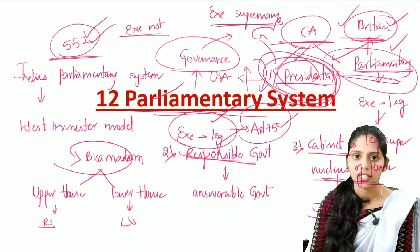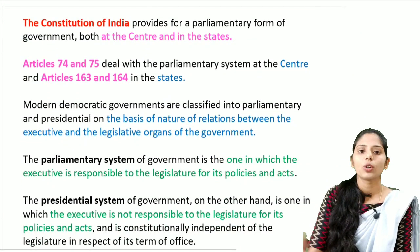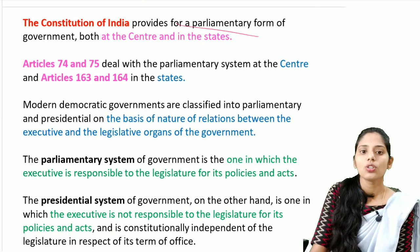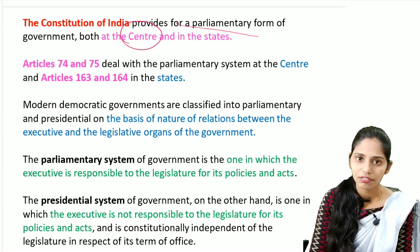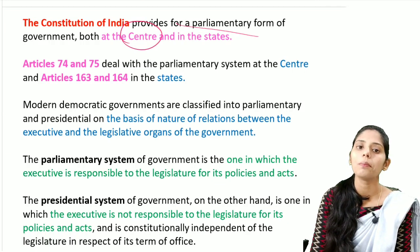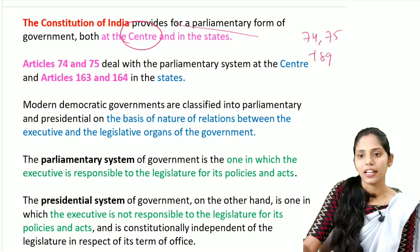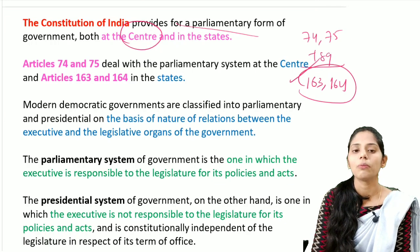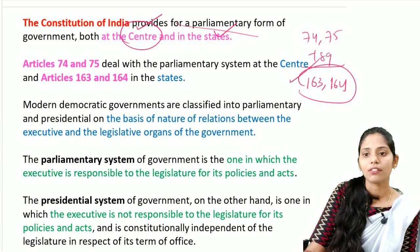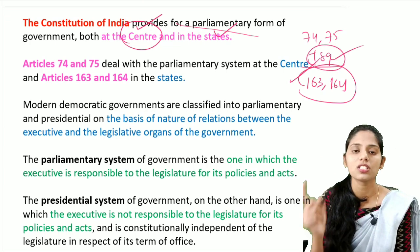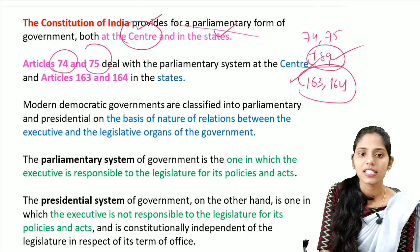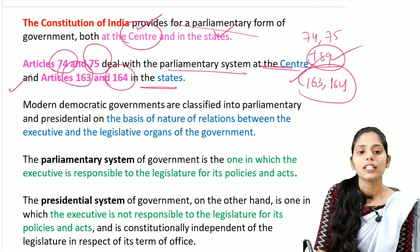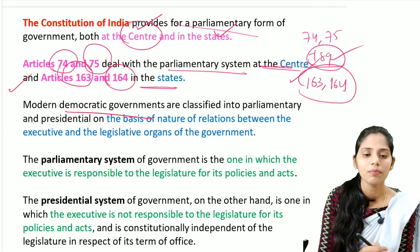The Constitution of India provides for the parliamentary form of government at both the central level and the state level. At the central level, Articles 74 and 75 of the Indian Constitution talk about the parliamentary form. For the state level, add 89 to these — that gives Articles 163 and 164, which talk about the parliamentary system at the state level. Modern democratic governments are classified into parliamentary and presidential forms based on the relationship between the executive and the legislature.